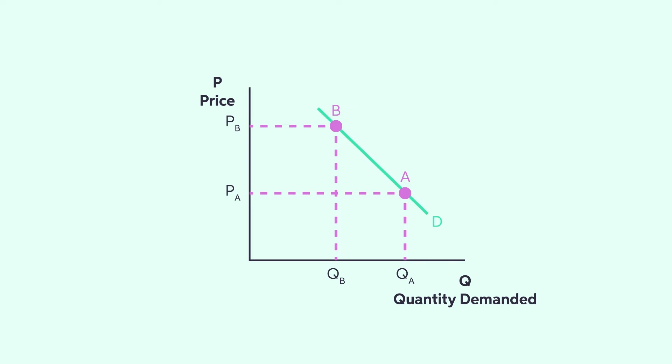Second, a shift of the demand curve happens when any of the demand determinants change, except for price. For example, we know an increase in income raises the demand for a normal good. In the graph, this is represented as a shift from D to D1.